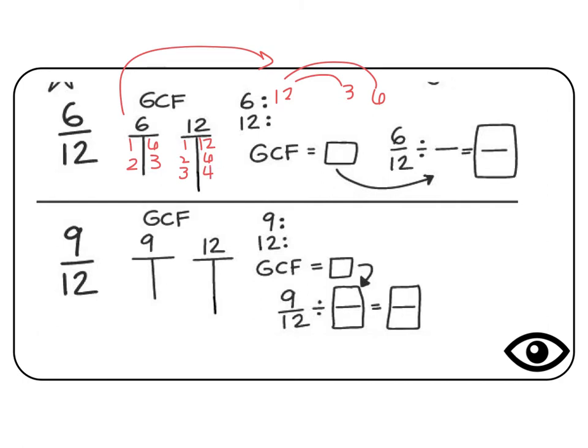So then what we want to do is we want to find a number that can go into both of our numbers. We want what we call a common factor, the greatest common factor, to be specific. So GCF stands for the greatest common factor, the biggest number they have in common.